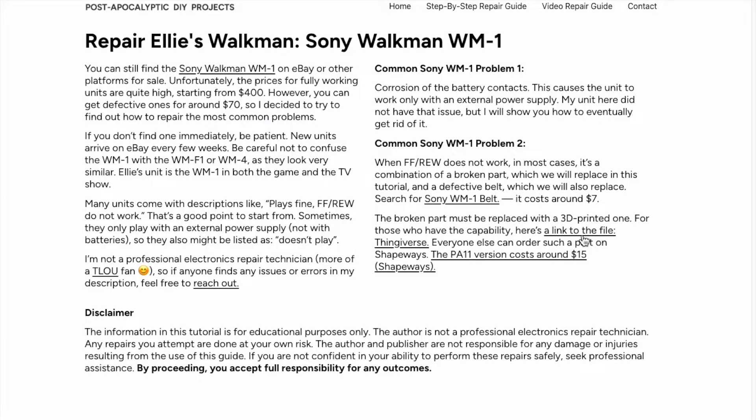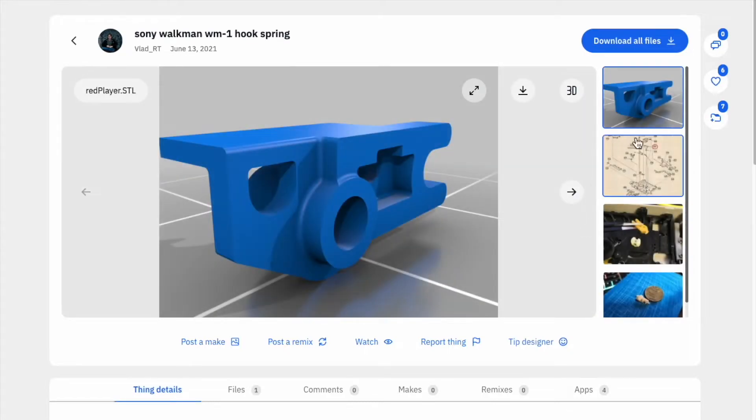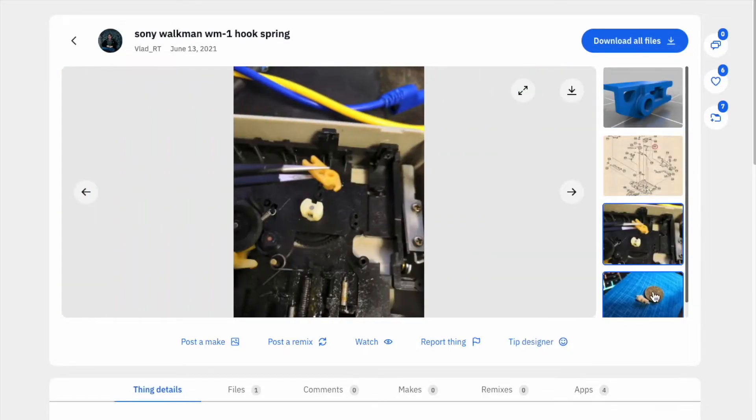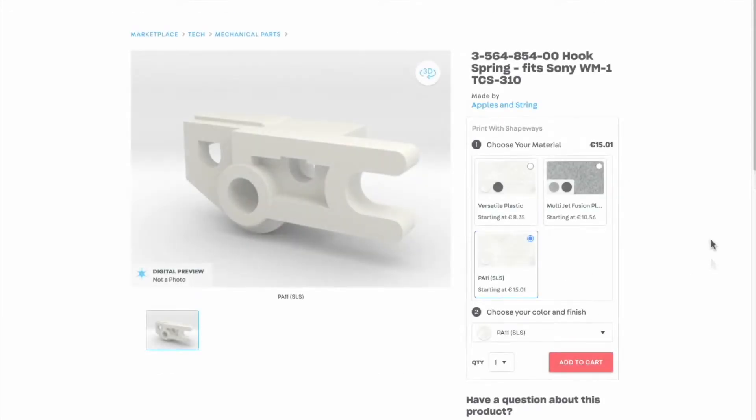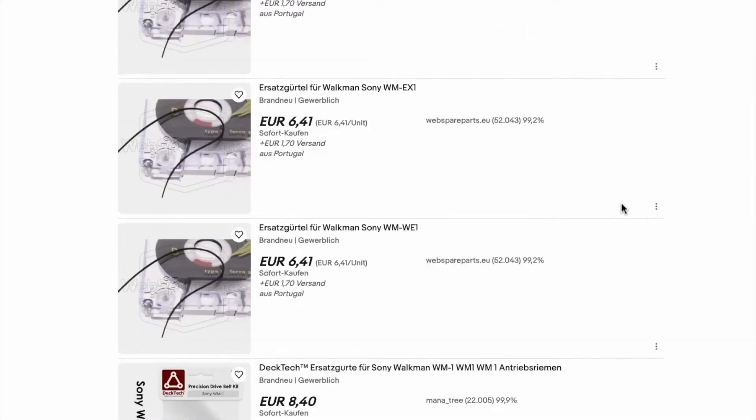For the broken part, we'll be using a 3D-printed replacement. You can find the file on Thingiverse if you have 3D-printing capabilities, or order one from Shapeways for about $15. The replacement belt costs around $7.